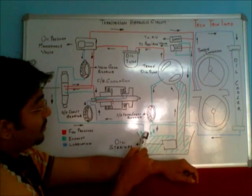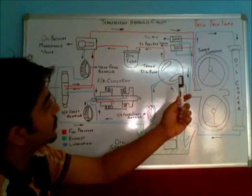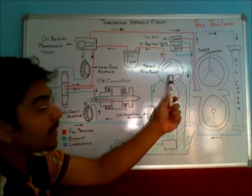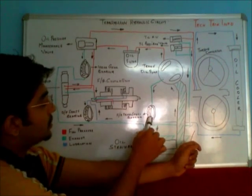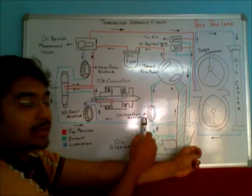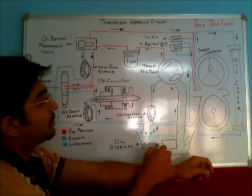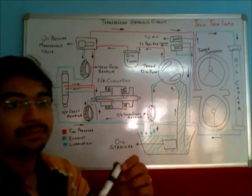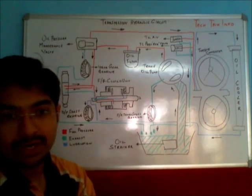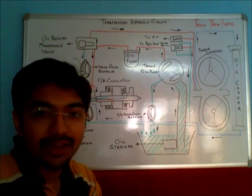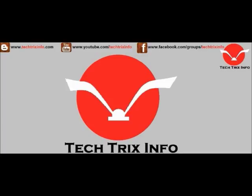There is also one line coming from the transmission oil pump which cools and lubricates the forward and reverse front shaft bearing, and then goes back towards the transmission oil sump. That's how the transmission hydraulic circuit of a backhoe loader construction equipment works. For more engineering tutorial video updates, please click the subscribe button. If you found this tutorial useful, please click the like button or drop a comment. Thanks for watching.